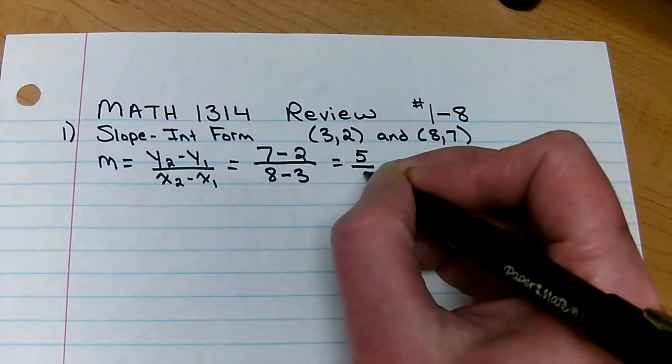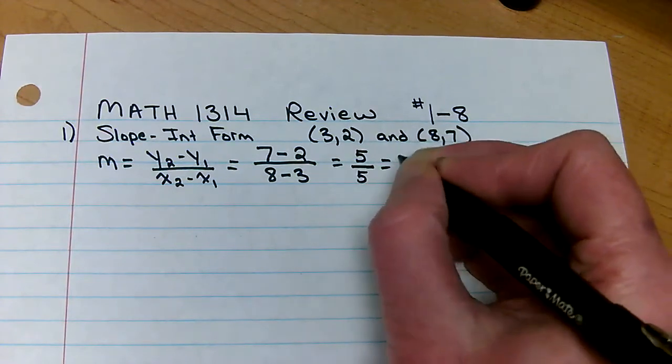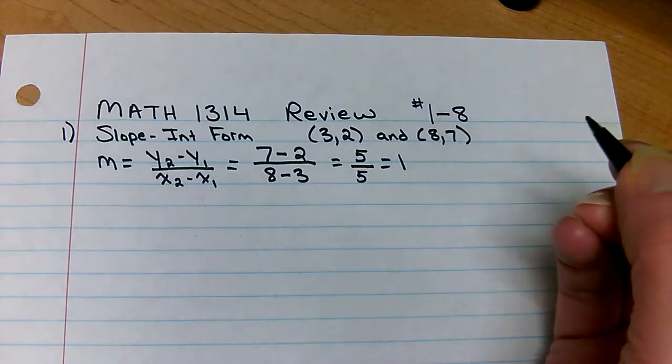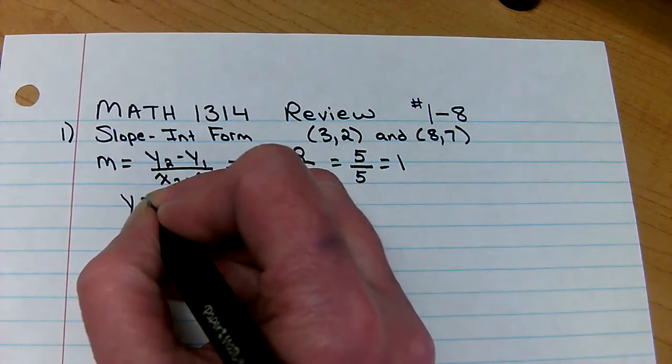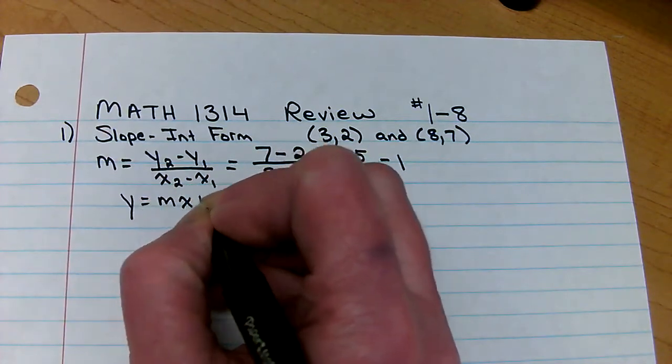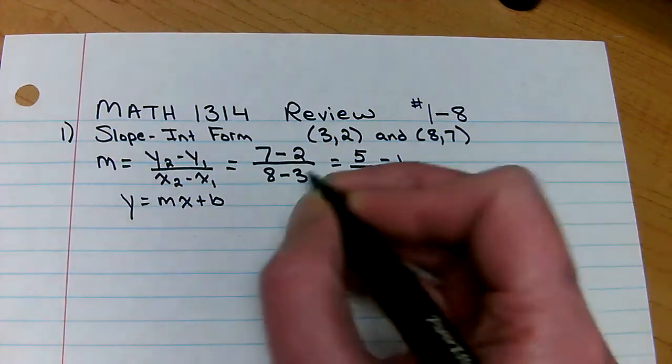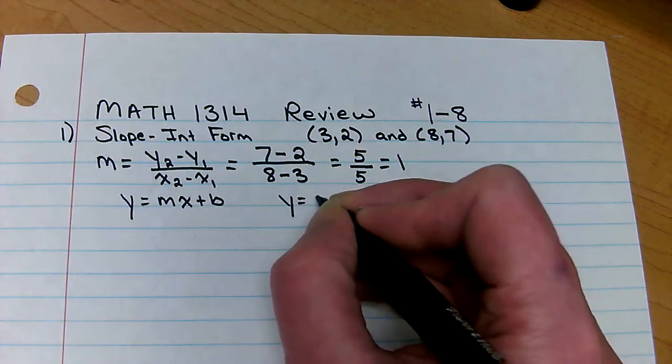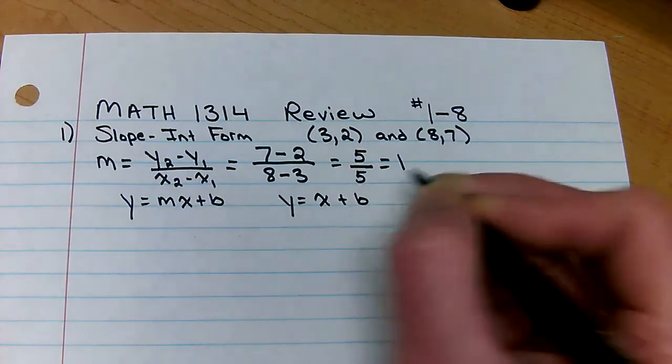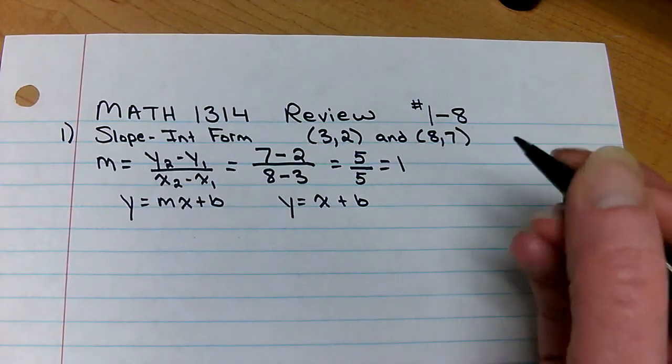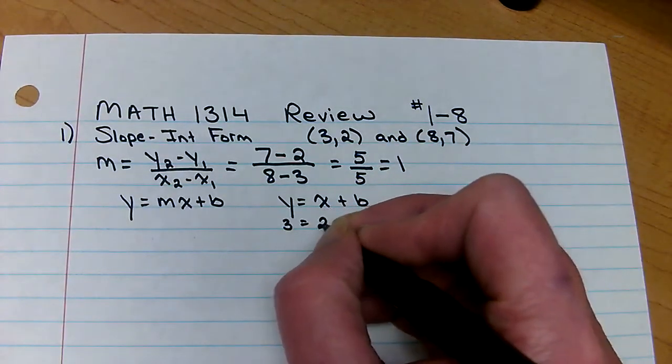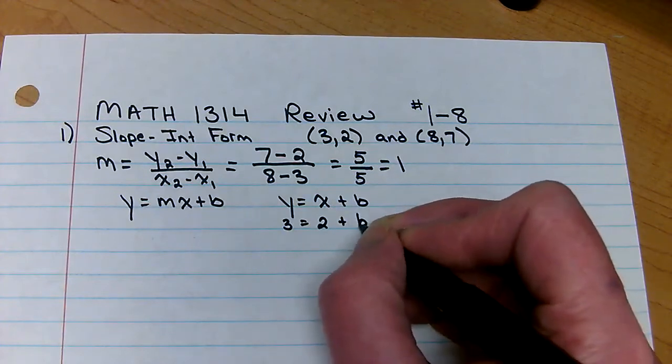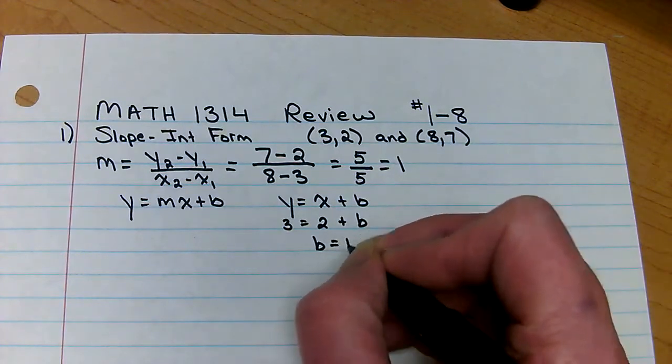Five over five, which is one. So we know that the m is one. So y equals mx plus b. We know that m is one, so one x plus b. So let's see if we can figure out what b is. So let's pick either point. Three equals two plus b, so b is one.